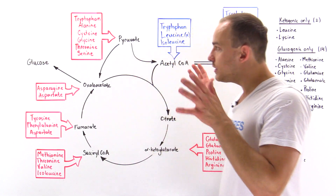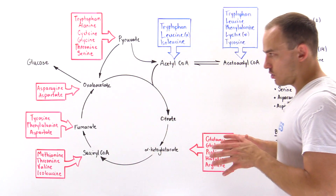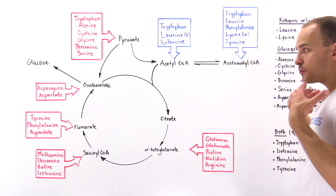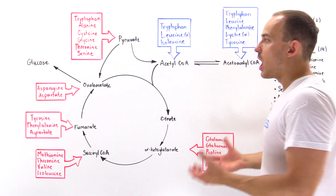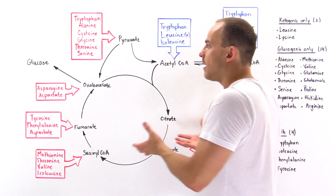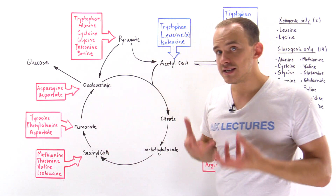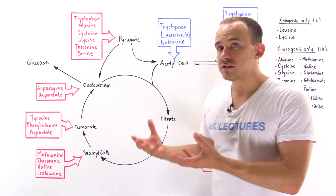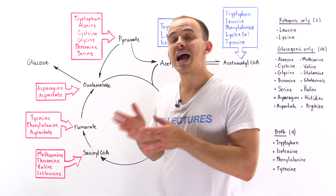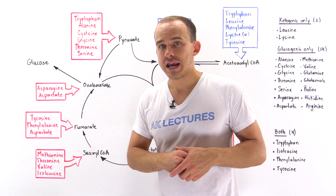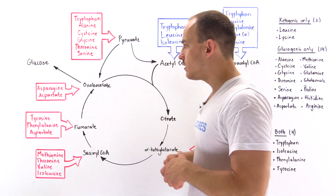All these seven molecules are intermediates of the metabolic pathway — the metabolic system that allows us to generate high energy ATP molecules.